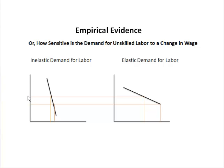So for a given price change — maybe from P1 to P2 — look what happens in the first graph: it only has a small impact on employment. But in the right-hand graph, the same price differential causes a much bigger difference in employment.